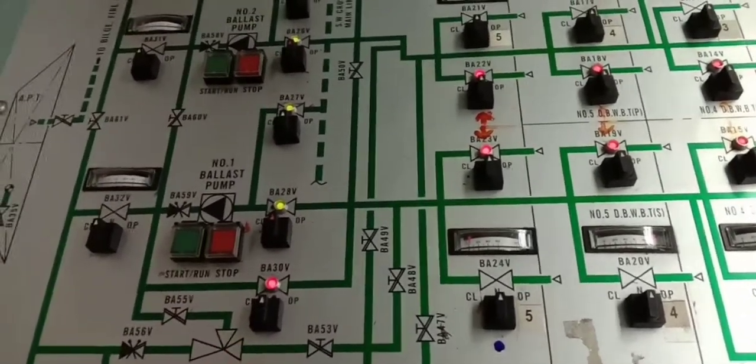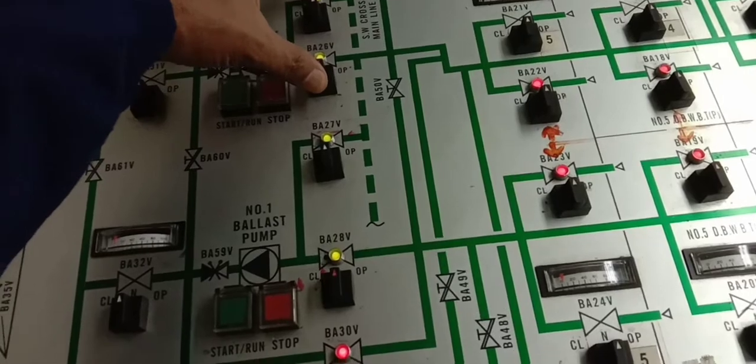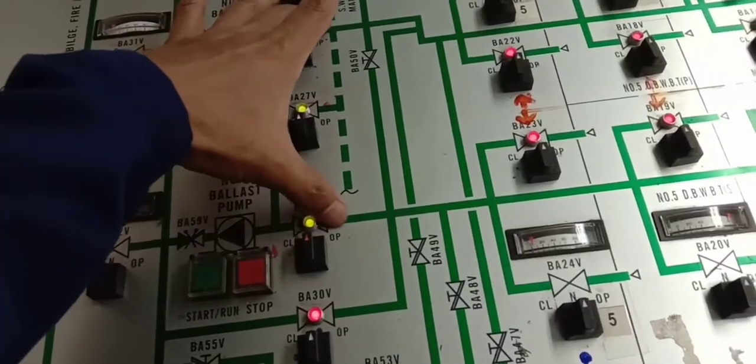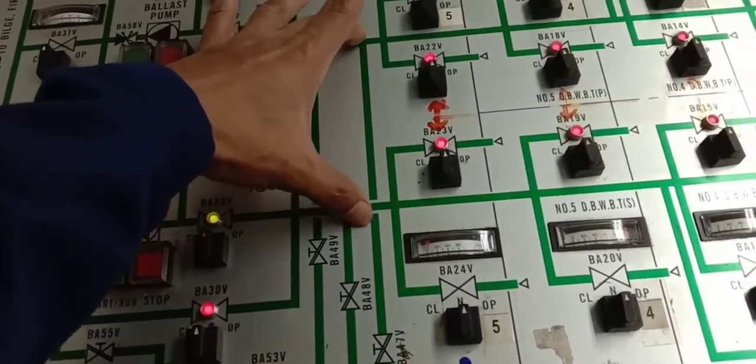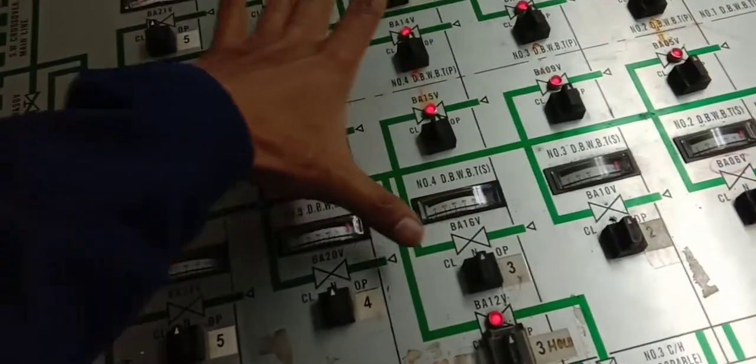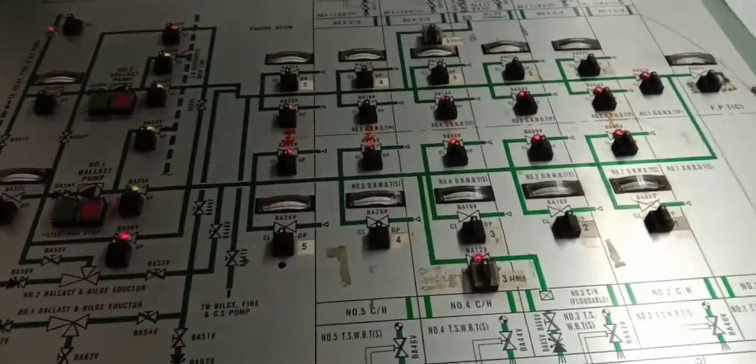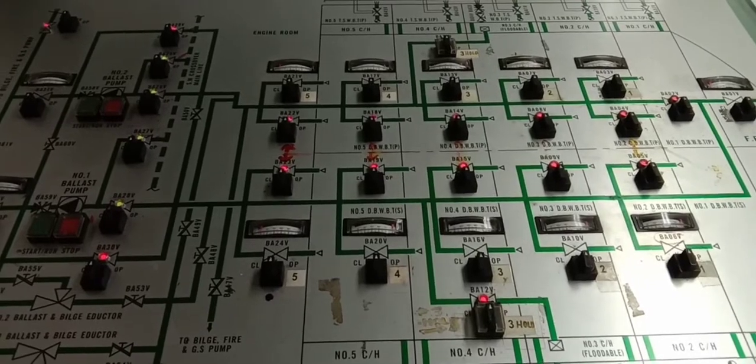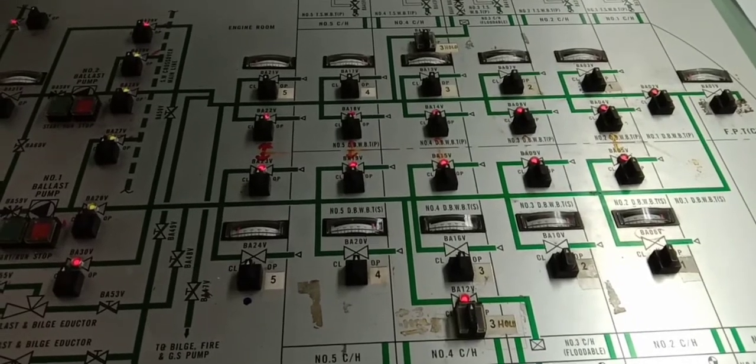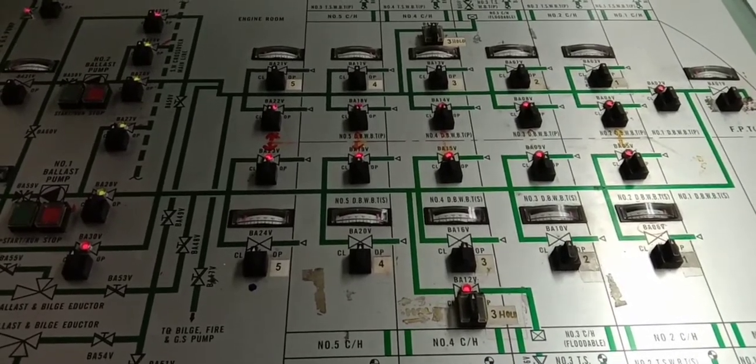Just open these two valves for the port side, and the mainlines for port and starboard are filled with water already. Once you open the ballast tanks, water will come inside freely. That's it, fellow mates - ballast operation by gravity. Thank you, and this is Coach RJ once again.